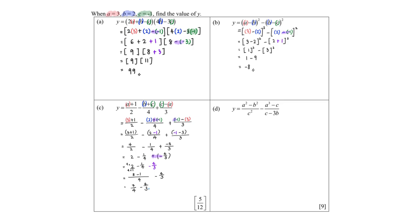At this stage, continue to make the denominator the same. Everything will be over 12 — that's the common denominator. 3 times 7 is 21, minus 4 times 4 is 16. And I will get my final answer: 5 over 12.